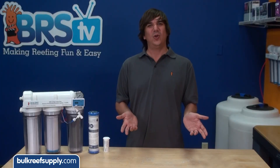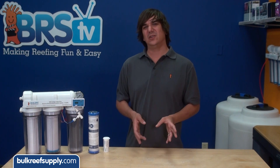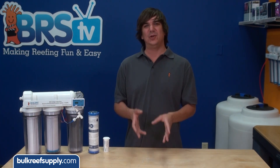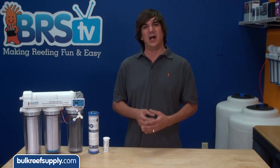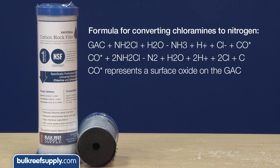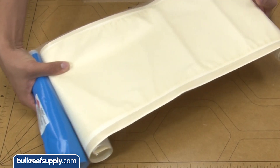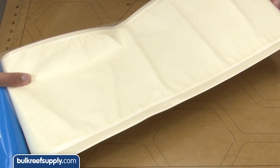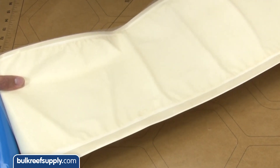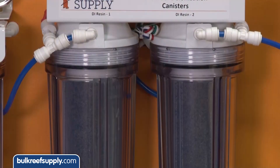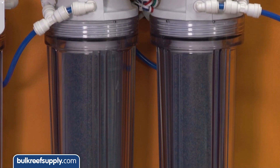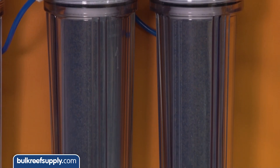One interesting note with chloramines in particular is if you properly treat them with the correct carbon block, some of the ammonia will be converted into harmless nitrogen. But even better, the thin film membrane will reject almost all of the residual ammonia split off of the chlorine, and protect the DI resin from being prematurely depleted.